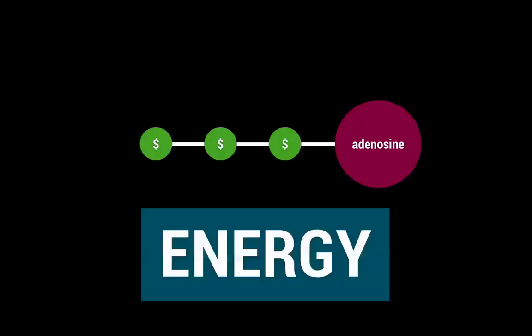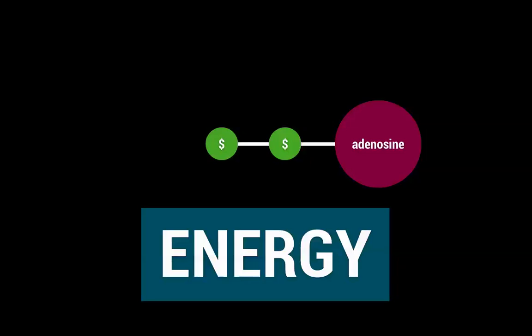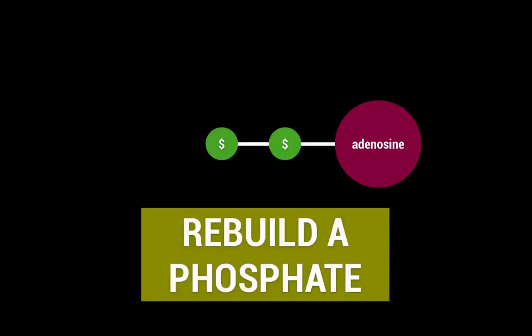Once you've used up that energy, it turns into ADP, or adenosine diphosphate. Just like 'tri' means three, 'di' — D-I — means two. ADP is like an empty wallet because you've used up one phosphate and it needs to be replaced to be powerful again like ATP. In other words, there is less energy in adenosine diphosphate than there is in adenosine triphosphate.